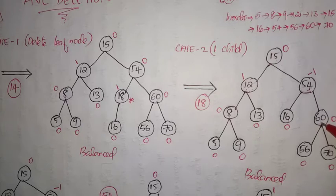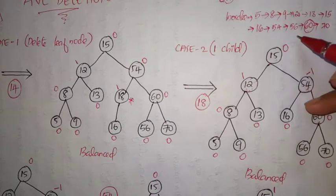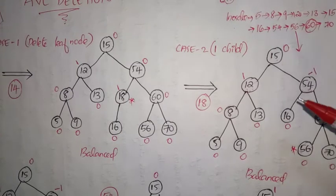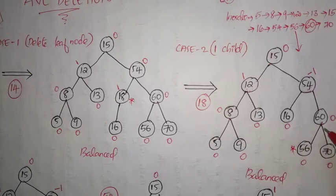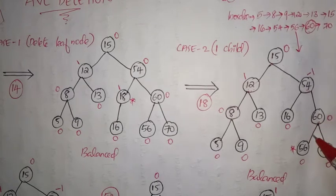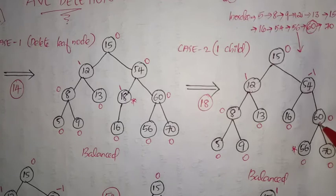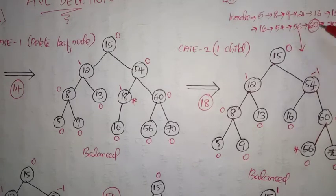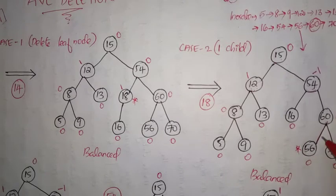Now we have to delete node 60. Node 60 has to be replaced with either its in-order predecessor or in-order successor. The in-order predecessor is the element just before the specific node — that is 56 — so 56 is the in-order predecessor of 60. Since this is a binary search tree, we know clearly that the in-order predecessor of a node is the highest element in its left subtree, and the in-order successor is the smallest element in its right subtree.